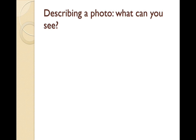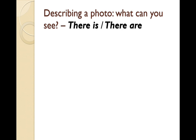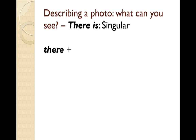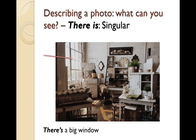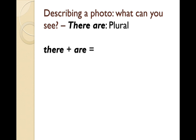Now let's talk about what you can see in the picture. We use 'there is' and 'there are.' 'There is' is singular — we can contract it to 'there's.' For example: there's a mirror; there's a big window. 'There are' is plural — there are two clocks.